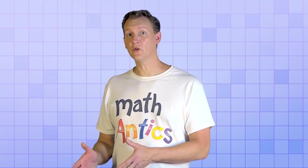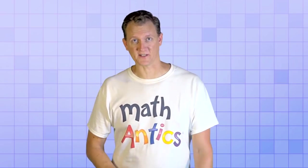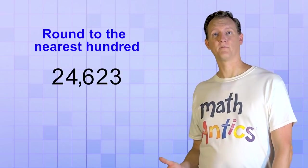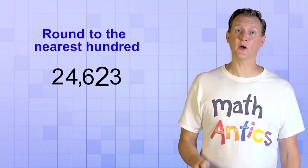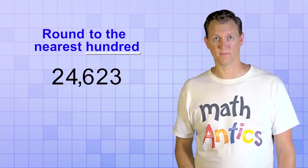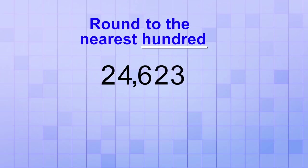Okay, so now that you know the basic procedure for rounding numbers, let's try a few specific examples. Here's the first one, round 24,623 to the nearest hundred. Since we need to round to the nearest hundred, we first need to identify the digit in the hundreds place. That digit is a 6, so that's our target.